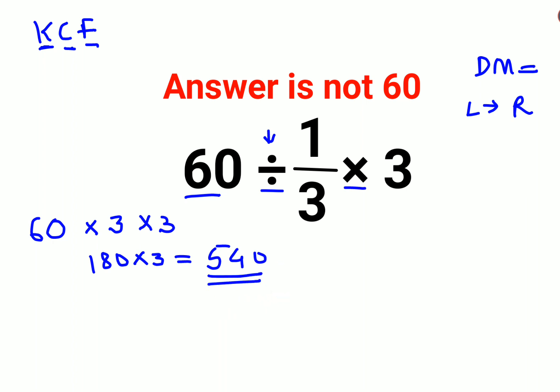I hope this is clear to everyone. You might be thinking when would the answer be 60. If the question was given this way: 60 divided by (1/3 times 3), if this was given in a bracket,